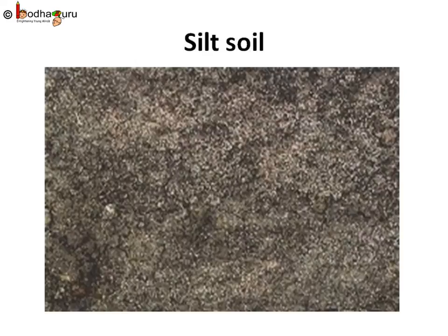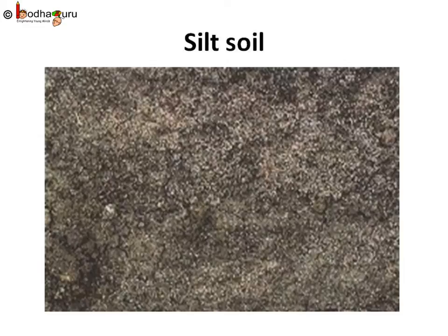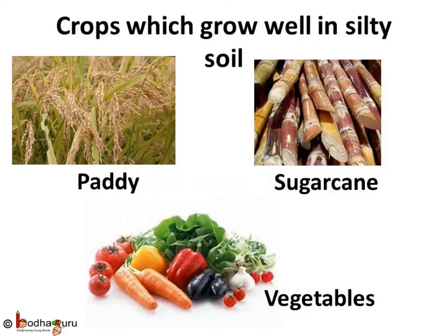If you live near a river bank, you must have noticed a soil which is a kind of mixture of sand and clay. That is a special kind of loamy soil as it contains silt in high quantity. The silty soil feels smooth, silky, and soapy when rubbed between the fingers. This soil can hold water in the tiny gaps between the silt particles and is very fertile. The soils with a lot of silt make excellent farmland but can erode easily. People can grow paddy, sugarcane, turmeric, and vegetables in silt soil.